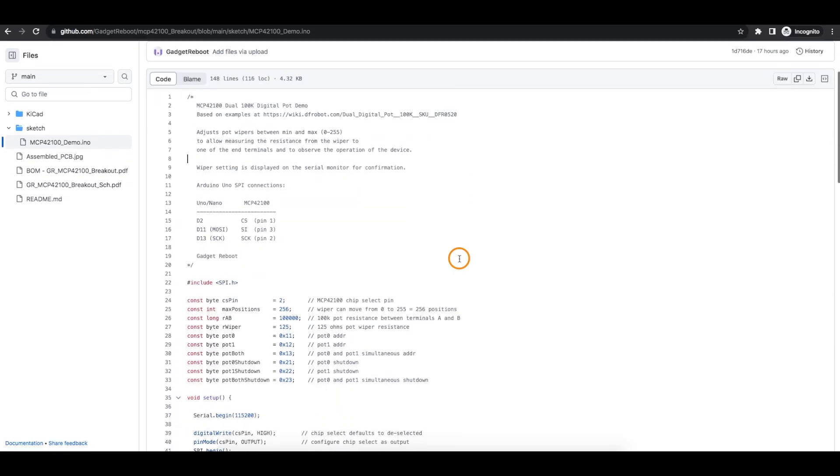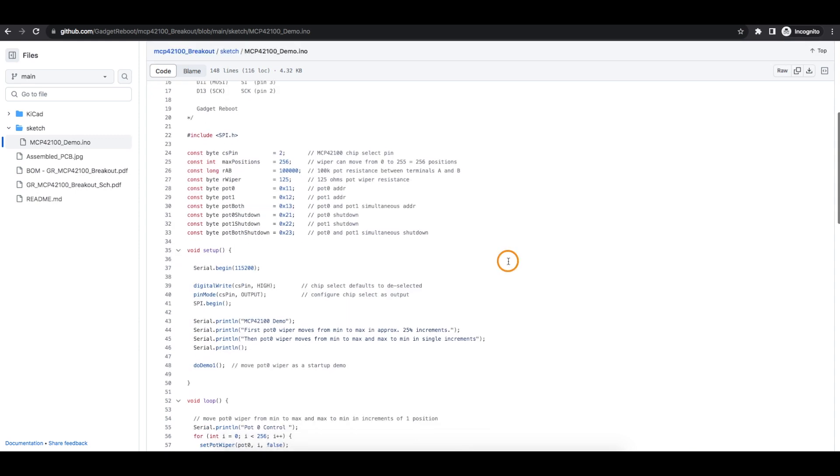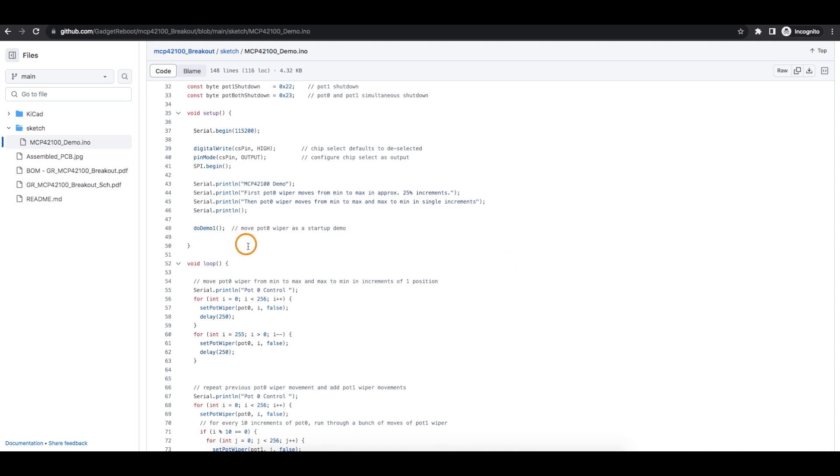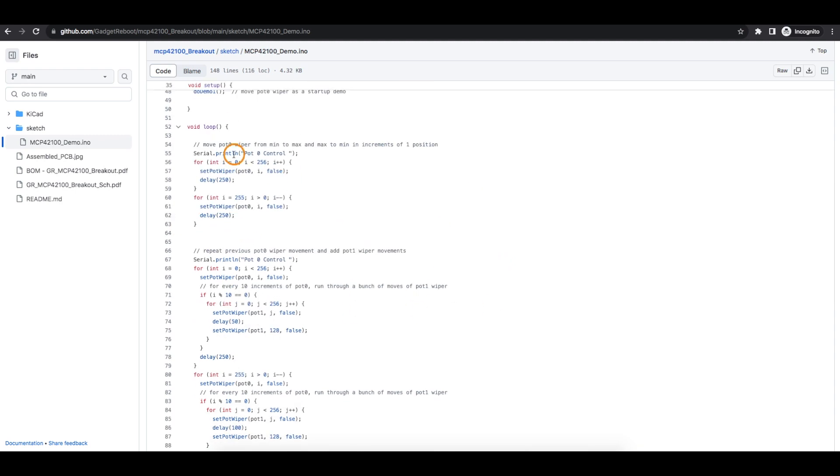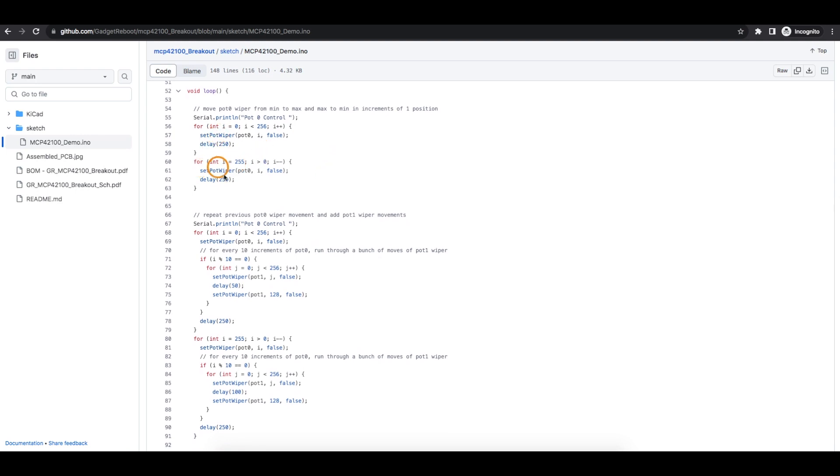In my demo sketch, these Nano pins here connect up to these digital pot pins for chip select, data coming into the pot, and the serial clock. Then down in the sketch, I'm just running a couple of demos where I'm going in a loop through all the possible 256 wiper positions. And I'm changing the pot wiper, waiting a little bit, and then doing the next increment in one direction, then the other direction.